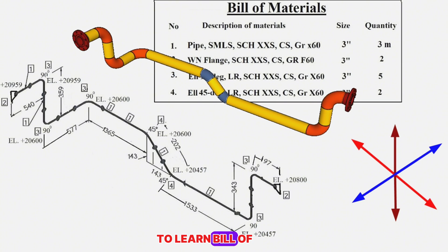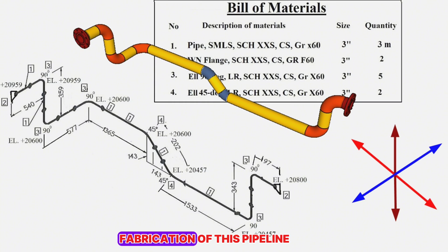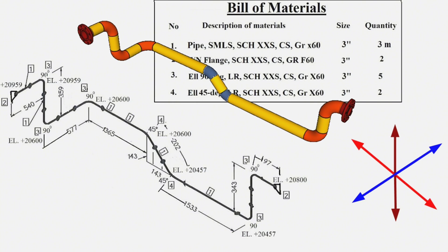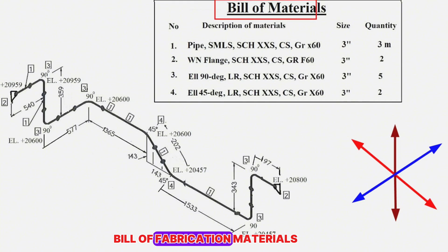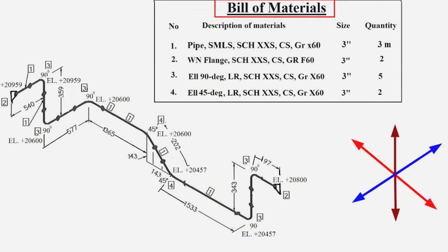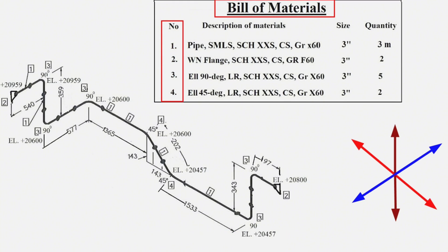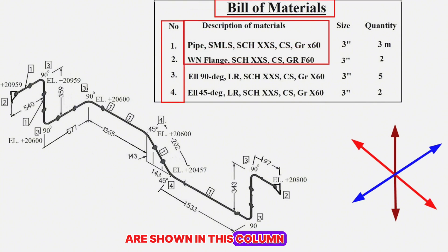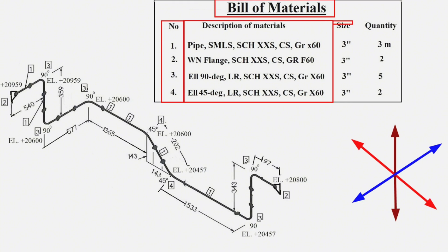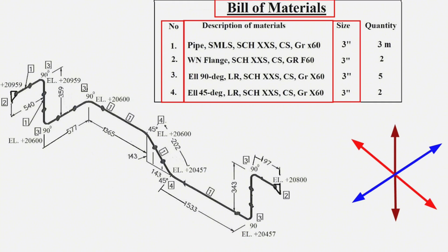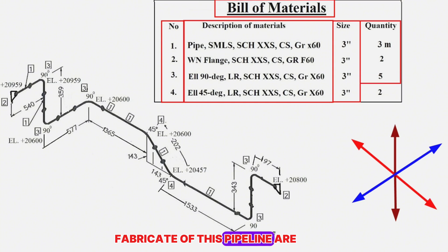Let's start by learning the bill of materials for fabrication of this pipeline. This table is for bill of fabrication materials. The item numbers, descriptions, sizes, and quantities of the materials used in fabricating this pipeline are each shown in their respective columns.